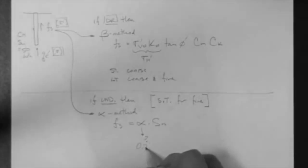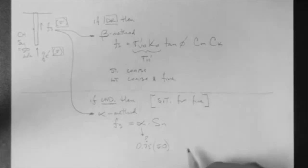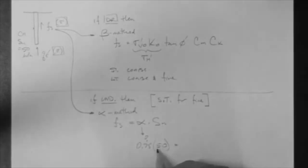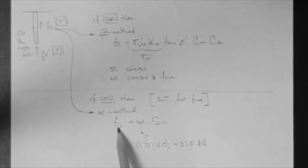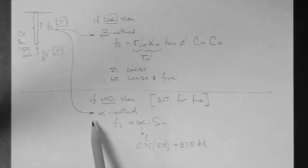So 0.75 times 50, that's 37.5 kPa. That's the method to determine Fs when we expect undrained friction.